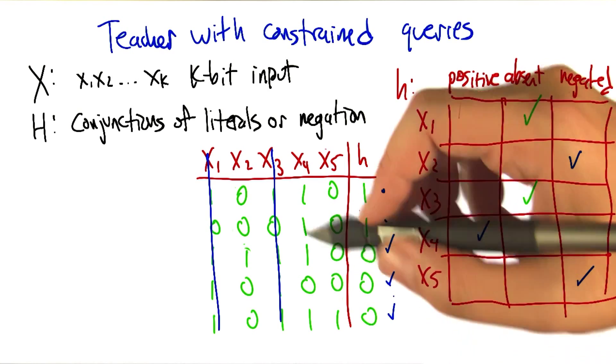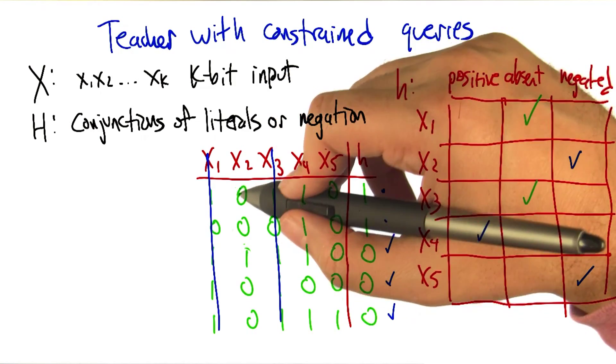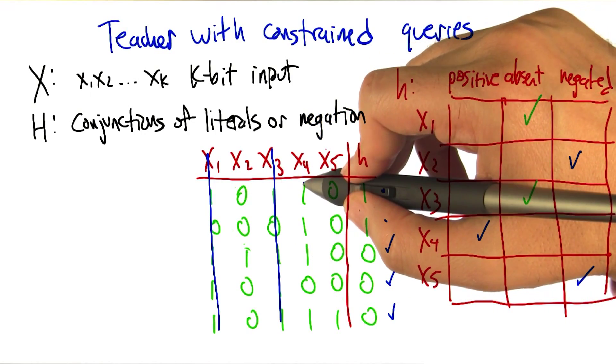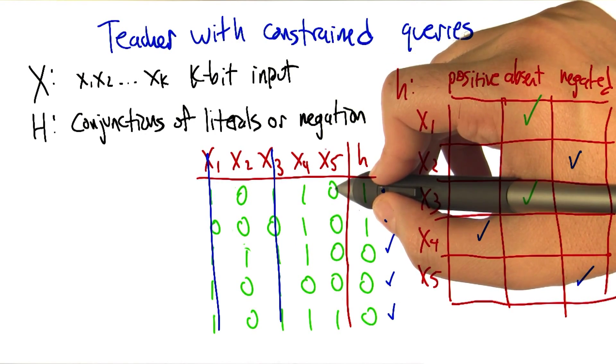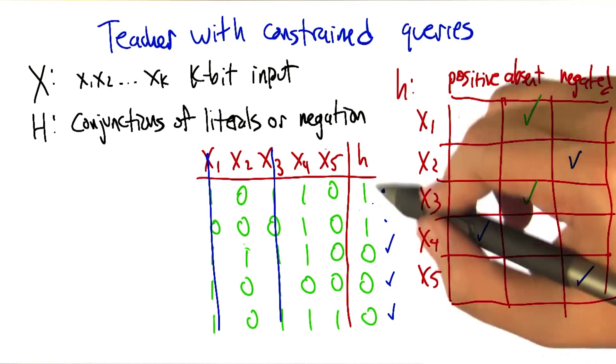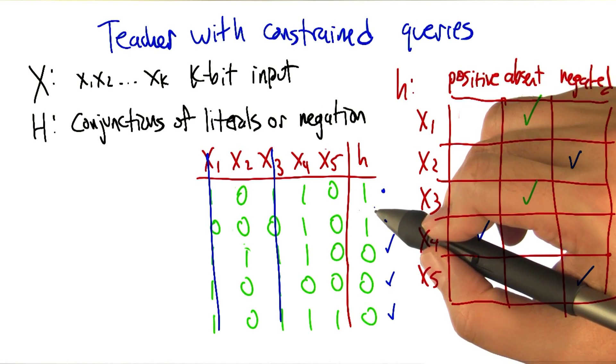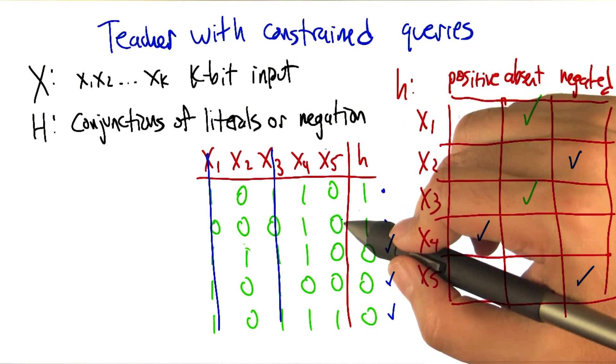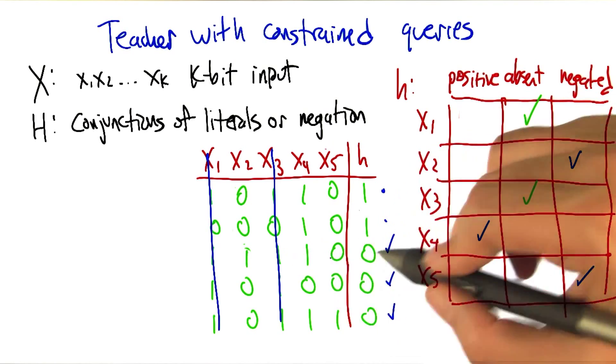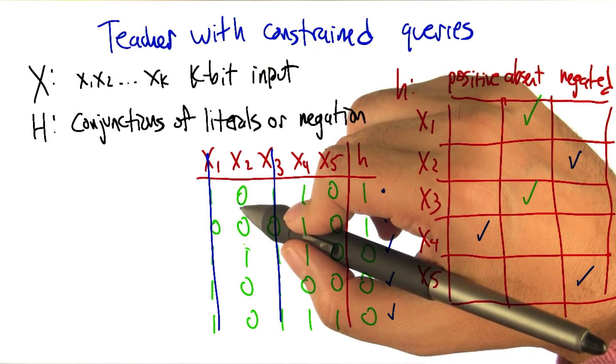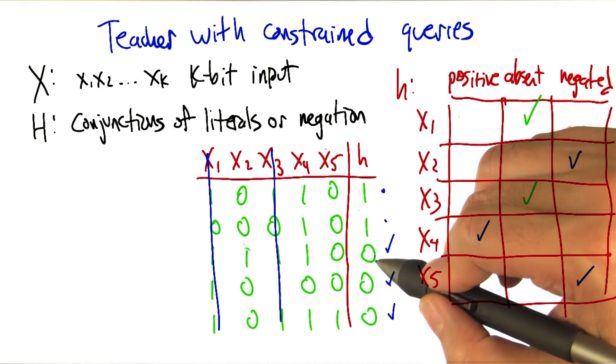So the thing to notice is that in these first two examples, we have x2 is false, x4 is true, and x5 is false. And that's enough to make the conjunction true. But flipping any one of those bits is enough to make it false. So what I showed in the remaining examples is that just by turning this x2 into an x1, leaving everything else the same, we lose it.